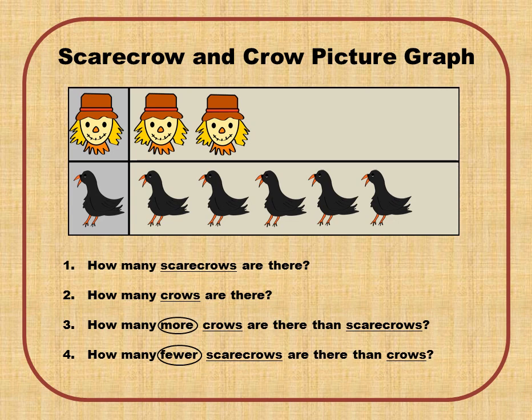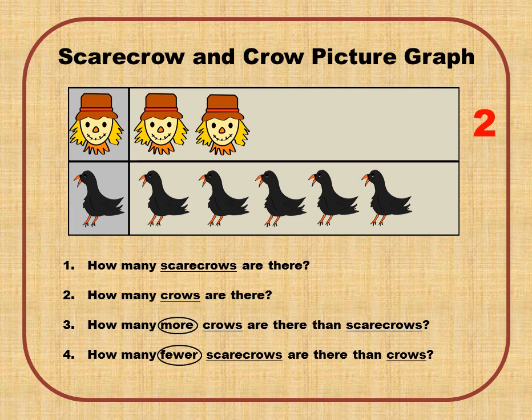Here's another graph — this is a scarecrow and crow picture graph. We'll use the data to answer the questions below. Question number one says: how many scarecrows are there? We don't count the first one, so: one, two — there are two scarecrows. Question number two says: how many crows are there? One, two, three, four, five — there are five crows.